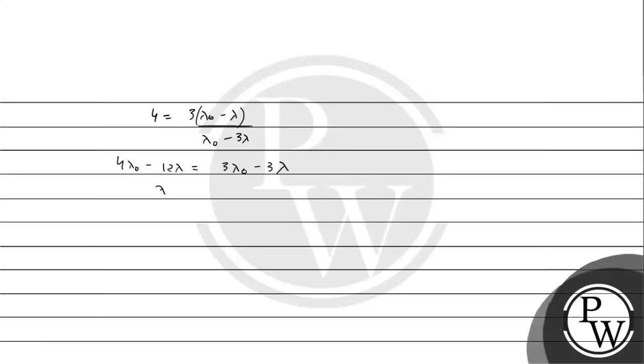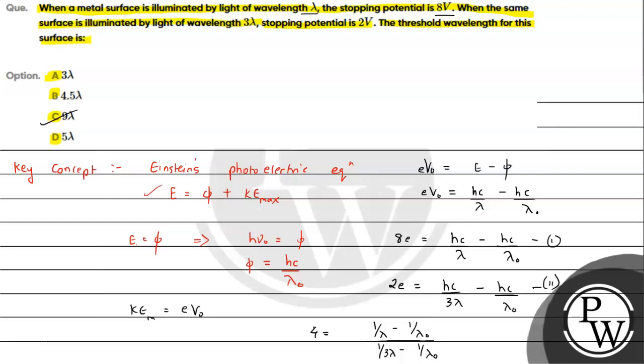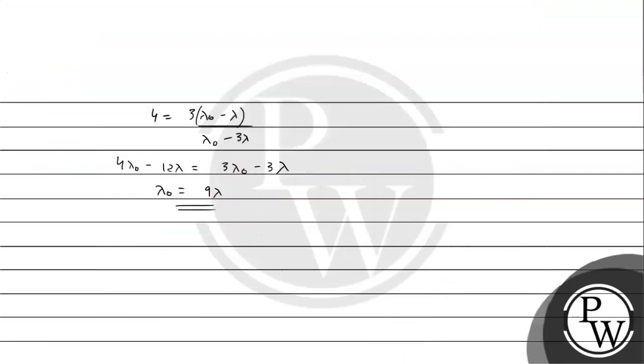Solving this, lambda naught equals 9 lambda. So the threshold wavelength is 9 lambda, which means option C is the correct answer. I hope you understood the solution — all the best!